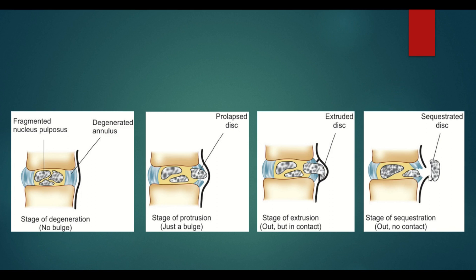Ultimately, the prolapsed disc gets out of the posterior longitudinal ligament as a sequestrated fragment. At this stage, the disc has completely lost its contact with the parent disc. This is how prolapsed intervertebral disc occurs.